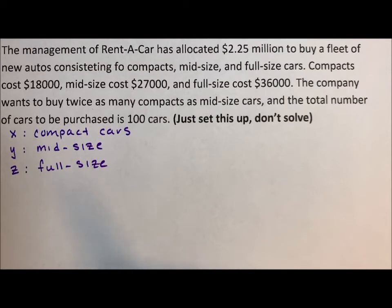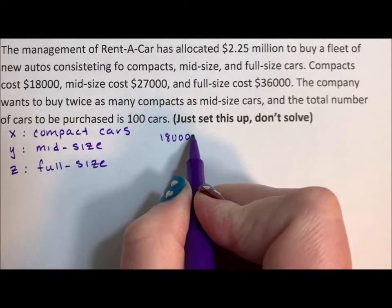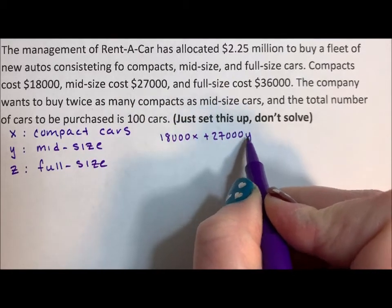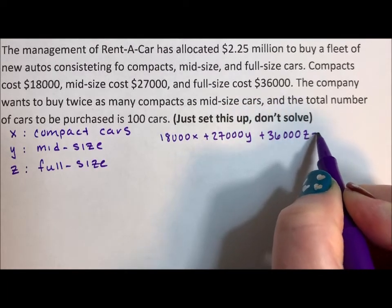So my first equation is going to deal with the money. So 18,000X plus 27,000Y plus 36,000Z equals 2,250,000.